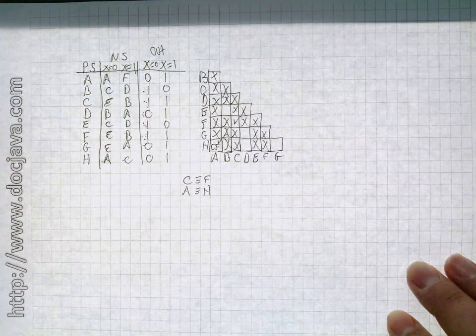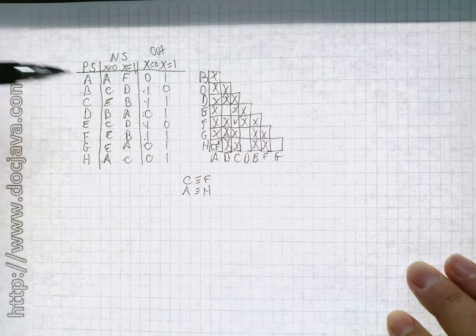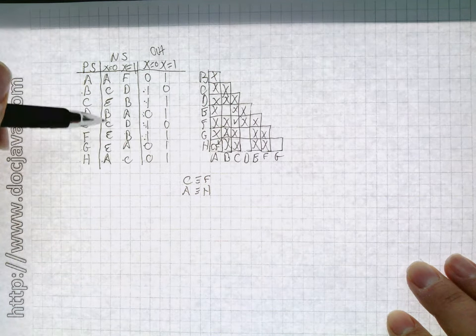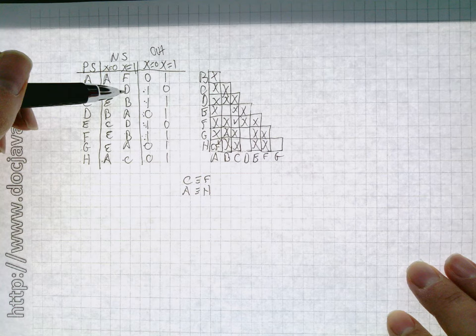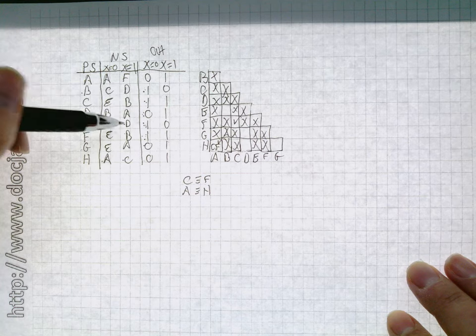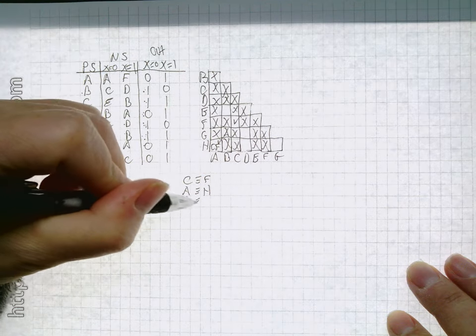So we got a couple of equivalencies already, that's pretty good. Let's take a look at B and E. B equals E if C equals C, that's promising, and if D equals D, so indeed B equals E.